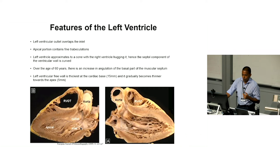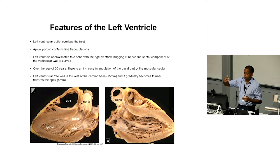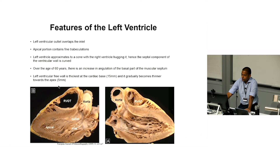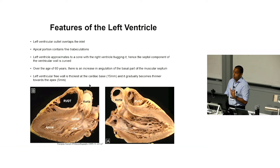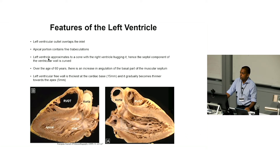That's why you can have SAM — systolic anterior motion of the mitral valve in hypertrophic cardiomyopathy — because that anterior part of the mitral valve is flung across into the outlet due to that continuity. Other features of the left ventricle include that the apical portion contains trabeculations. It can be more prominent in some people, and with MRI we're seeing it more prominently. Whether it's pathological or not, time will tell with ongoing studies.